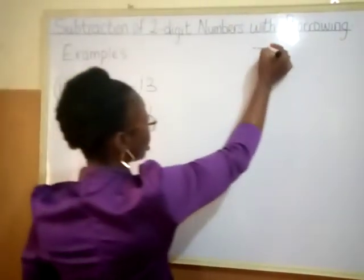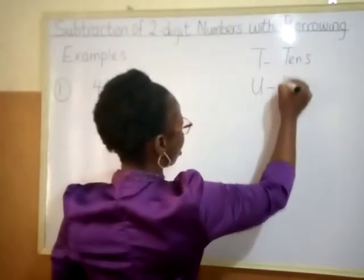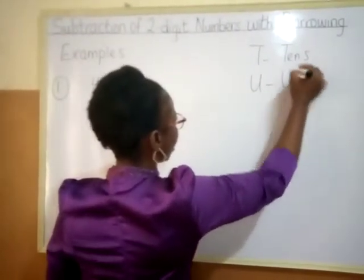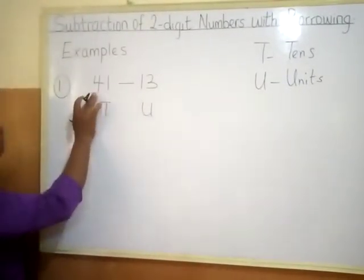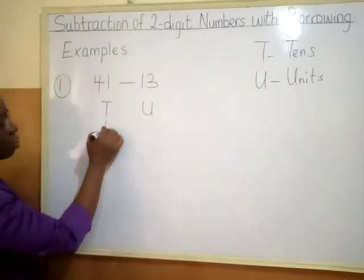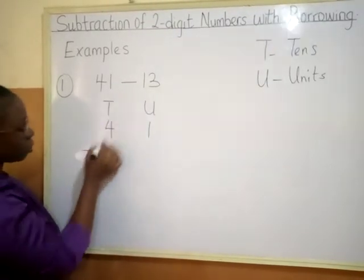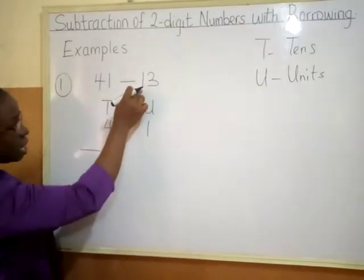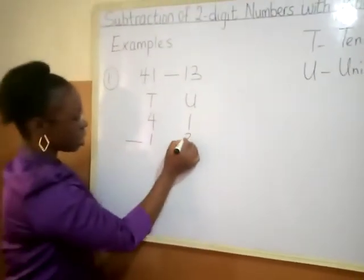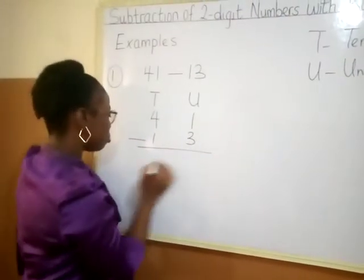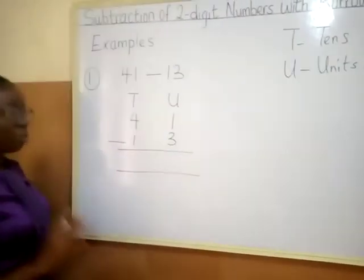T stands for tens and U stands for units. So I'll arrange it. In 41, I have four tens, one unit. Minus 13 is one ten, three units. The arrangement must be perfect. The way we arrange is very important.